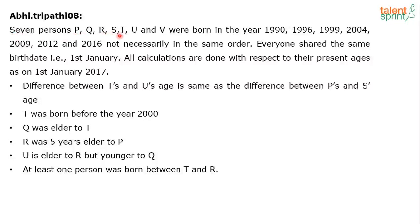Seven persons P, Q, R, S, T, U and V were born in the years 1990, 1996, 1999, 2004, 2009, 2012 and 2016 — not necessarily in the same order. Everyone shared the same birth date, which is 1st of January. All calculations are done with respect to their present ages as on 1st January 2017.